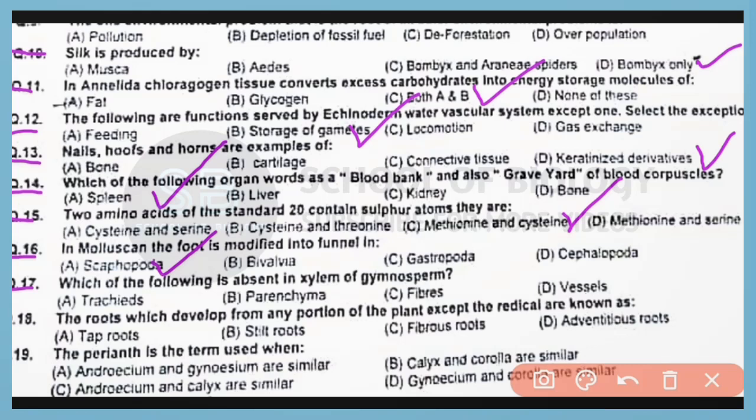Question number 17. Which of the following is absent in the xylem of gymnosperms? Correct answer is option D. Vessels are absent in the xylem of gymnosperms.